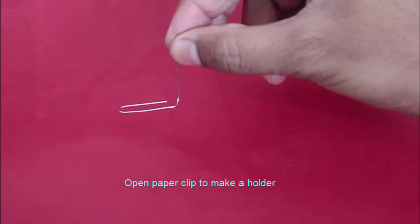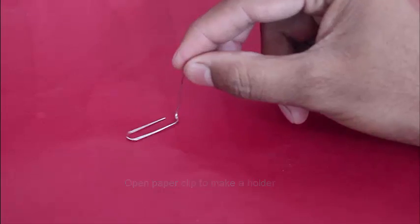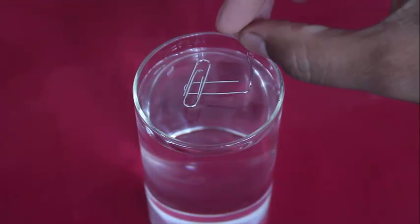Take the second paper clip and fold it at right angles to make an improvised holder. Place the second paper clip on this.